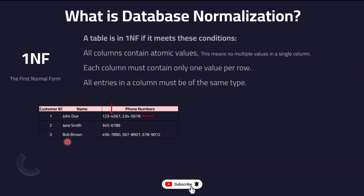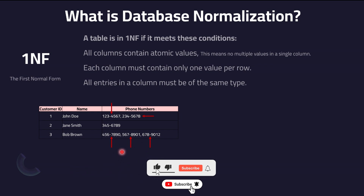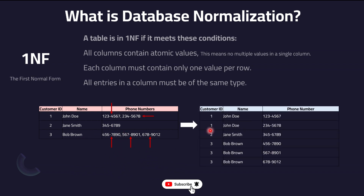Jane Smith is okay because she has only one phone number. But Bob Brown has three phone numbers, all stored in the same column — again not following database normalization rules. To apply 1NF, we convert the table so that John Doe appears in one row with his first phone number and another row with his second. Bob Brown would have three separate rows, one for each phone number. That's how the first normalization rule is implemented.